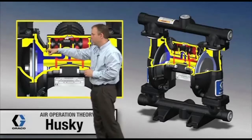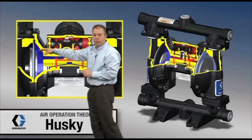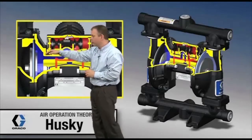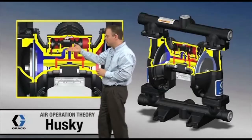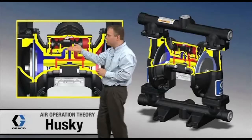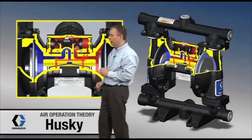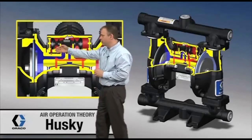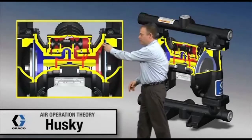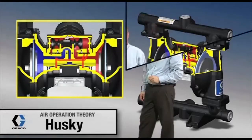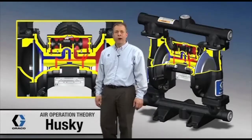Over on the other diaphragm we've got blue again — that's reduced air pressure or exhausting. It's connected through here and coming up through a passage with a cup and plate up in this module, connecting it to a vent. So we've got vent over here and high pressure from the air valve going to this diaphragm.